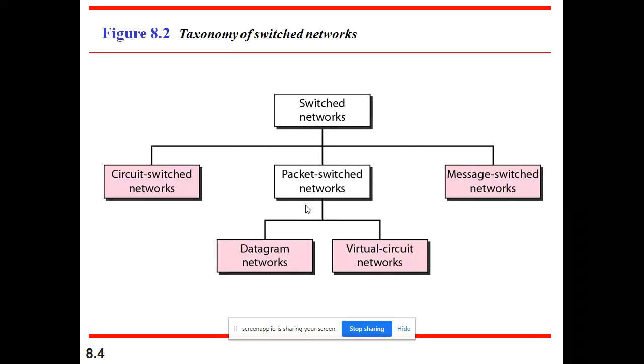Next step, we will go for switching types. In the switching, there are three methods. They are circuit switching, packet switching, and message switching. In the packet switching, once again, we have two more types: datagram network and virtual circuit network.